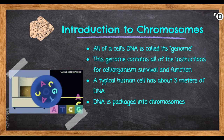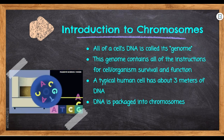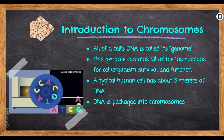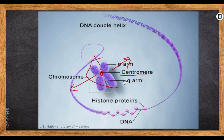Introduction to chromosomes: all of a cell's DNA is called its genome. The genome contains all of the instructions for a cell or organism's survival and function. A typical human cell has about three meters of DNA — a meter is about from your outstretched finger to your nose, so three of those. There are experiments where you can extract DNA from things like a banana and actually see it without a microscope. The DNA is packaged into chromosomes. The human genome project was able to map the entire human genome, and remember it is packed into chromosomes — this structure right here.